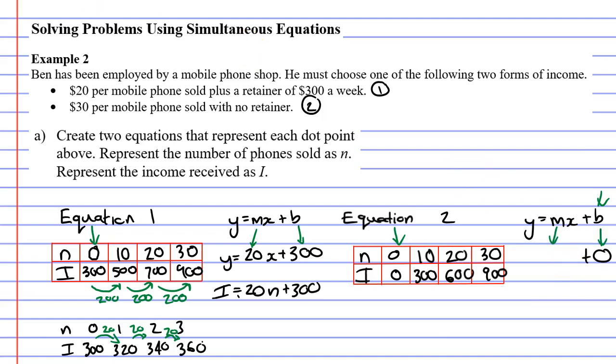And we've also got to find m. Once again, we need to figure out what we're going up by each time. Or sometimes it's down by if we have a negative gradient. And we know that because n is going up by 10s, we can't really use 300 as our gradient. So let's look at what would happen if we were going up by 1s each time. What would our income become?